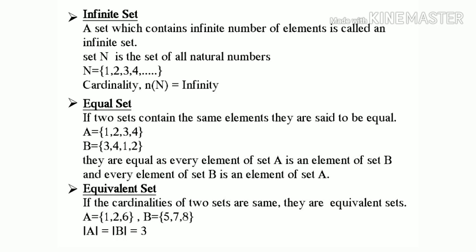Equivalent set. If the cardinalities of two sets are the same, they are equivalent sets. A equal to {1, 2, 6}, B equal to {5, 7, 8}. Cardinality of A equal to cardinality of B, which is equal to 3.